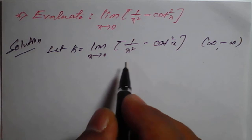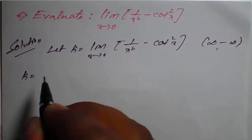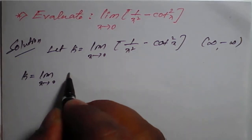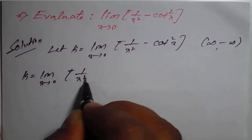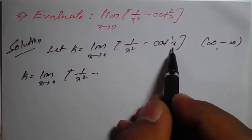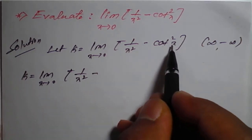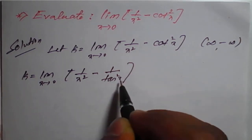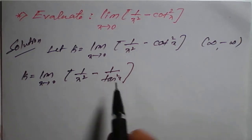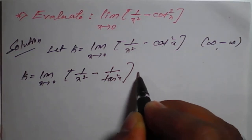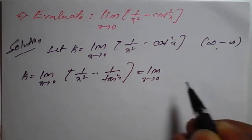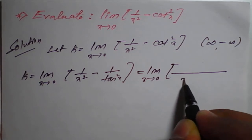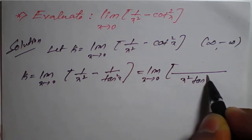Before applying L'Hôpital's rule, we need to go for simplification. So k equals limit as x tends to 0 of 1 upon x square minus 1 upon tan square x. Taking the LCM, which is x square into tan square x, we get tan square x minus x square in the numerator, over x square into tan square x.